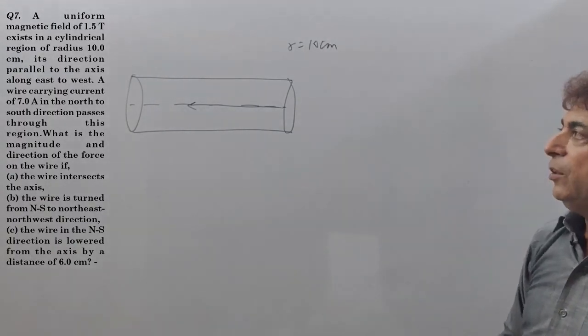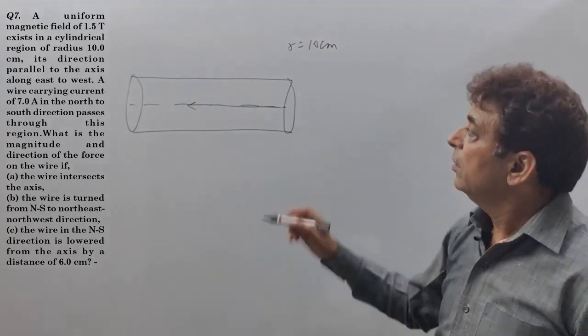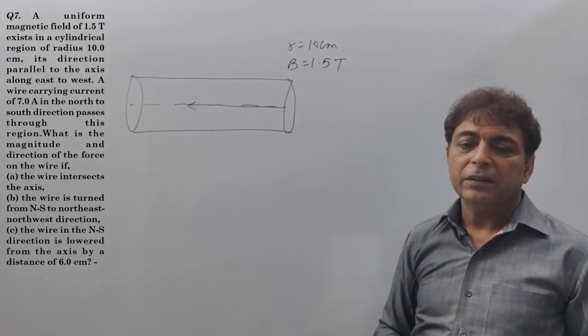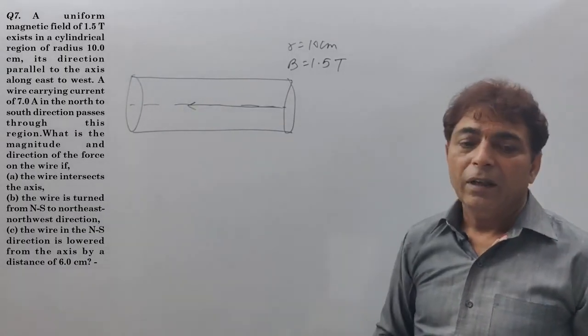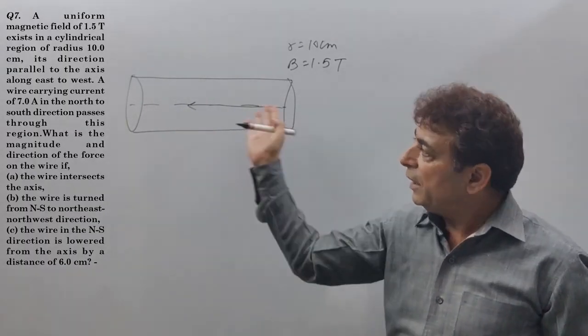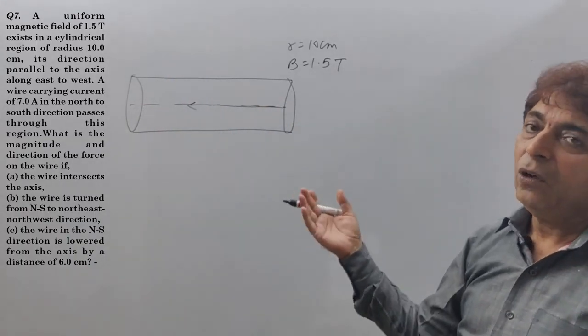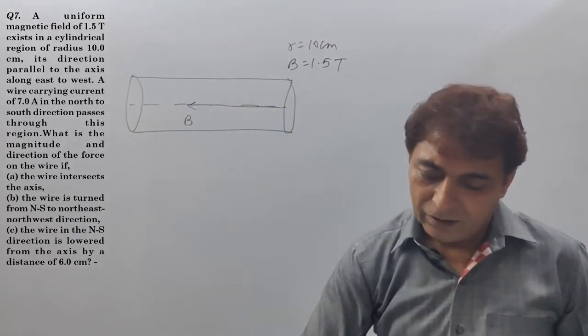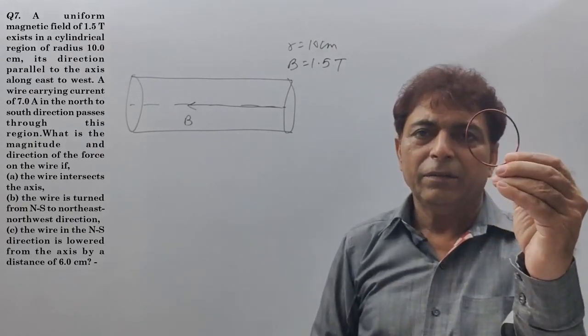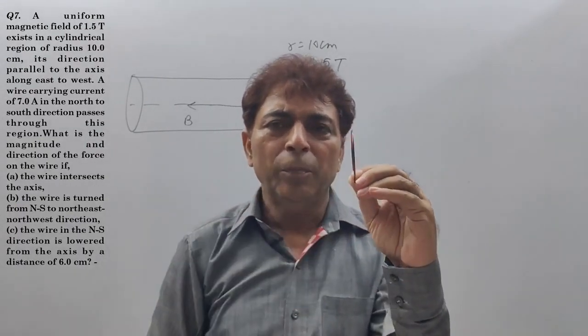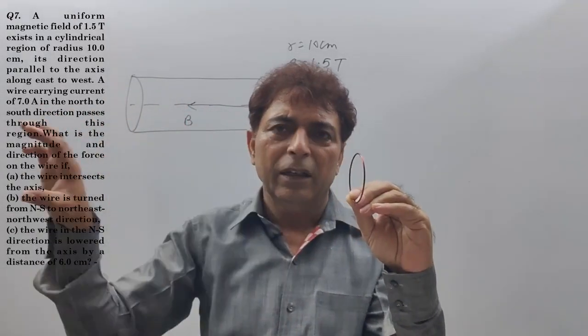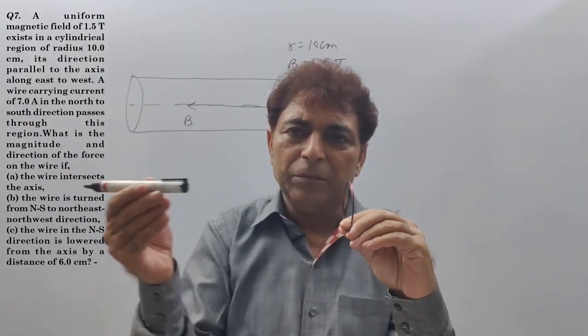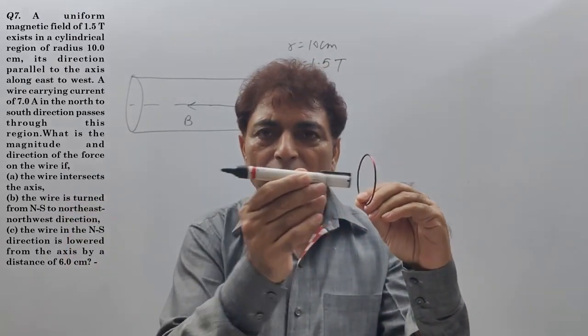Once again, it says a uniform magnetic field of 1.5 tesla exists in a cylindrical region of radius 10 cm, its direction parallel to the axis of the cylinder along east to west direction. Magnetic field is along east to west. We have a loop, the cylinder's cross section. This is the cross section. The field is in this direction, from east to west.